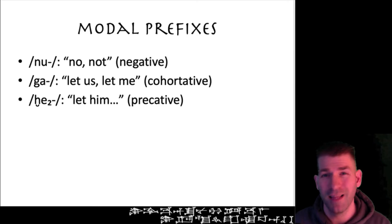Let's take each of these individually. The negative modal prefix nu changes the meaning of the verb from positive to negative. As noted above, if mu-n-du₃ means 'he built,' then nu-mu-n-du₃ would mean 'he did not build.' It's really as simple as that.